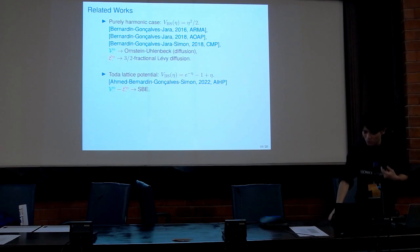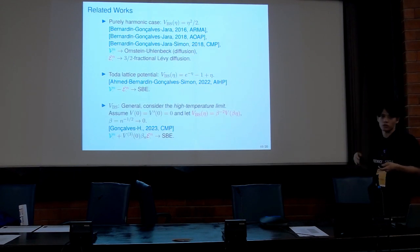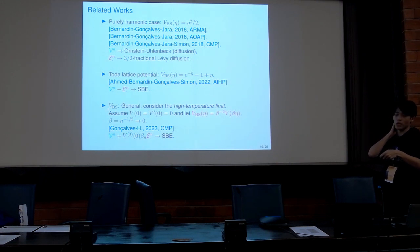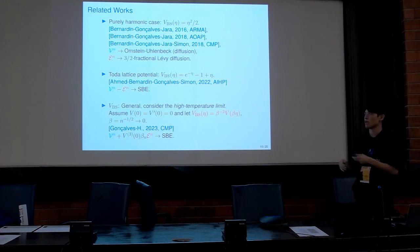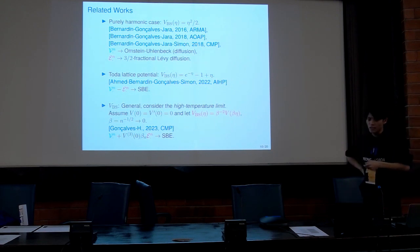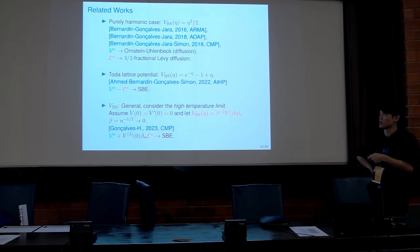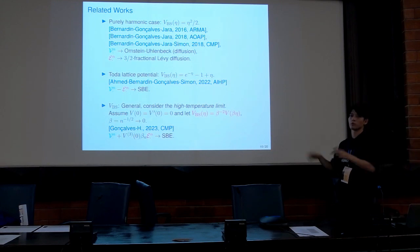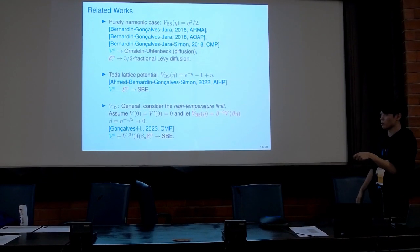What I want to do is extend this result to various types of potential. We consider a very general nonlinear potential V, and the aim is to derive the KPZ equation from this very general model without imposing a very specific choice of potential. The idea is to take a high temperature regime by choosing beta equal to one over square root of n. Then we can find a nice linear combination of volume and energy fluctuation from which we can derive the stochastic Burgers equation.